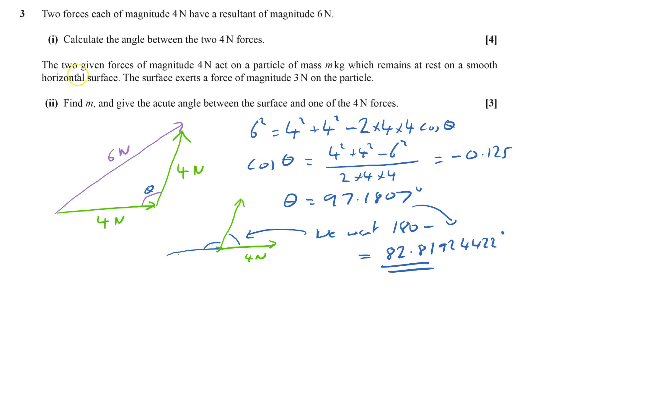Let's see what happens now. The two given forces, so that's these two forces here, of magnitude 4n, acts on a particle of mass m, which remains at rest on a smooth horizontal surface. So we've got a smooth horizontal surface here and this particle is at rest on there. Well, that means that these two forces, they must be going so that the resultant goes straight upwards, because if it were to go at all to one side, it would go that way, because it's a smooth horizontal surface.